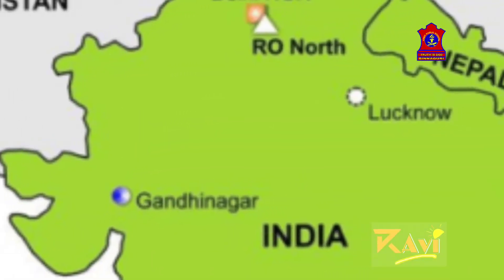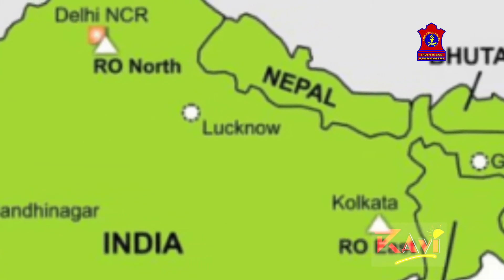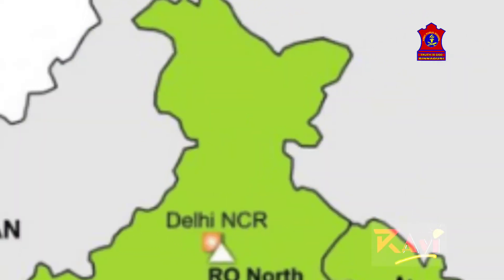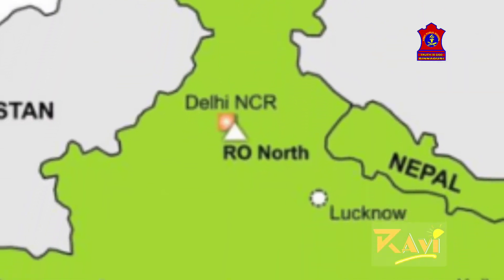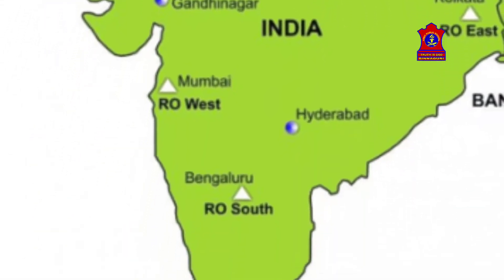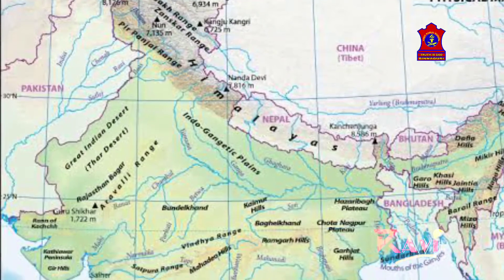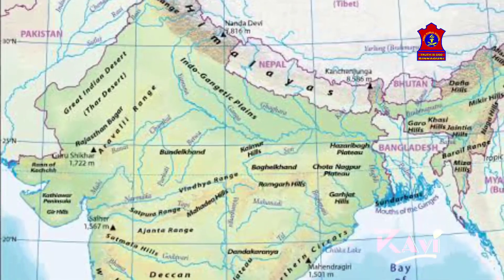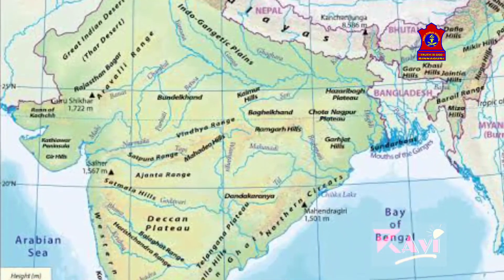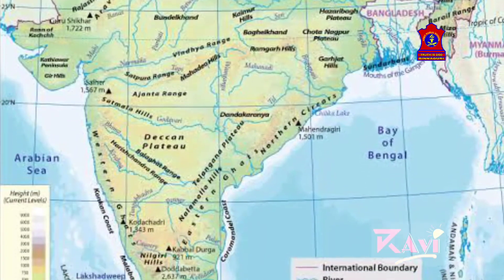From west to east, it is nearly 3,000 km. From north to south, it stretches about 3,200 km. It has a land boundary of 15,200 km and a coastline of over 6,500 km.